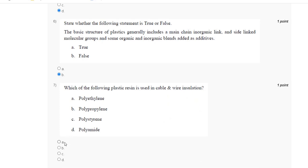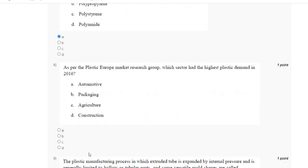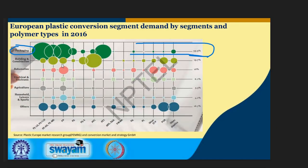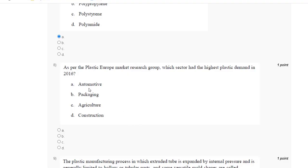Question number eight: as per the plastic group market research, which sector had the highest plastic demand? Packaging accounts for 39.9%. The correct answer for question number eight is B, packaging.